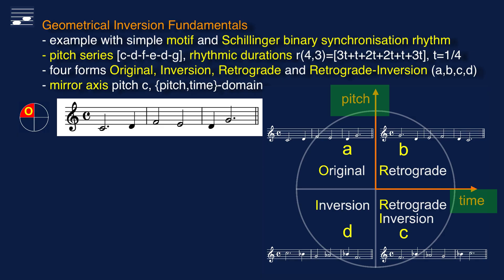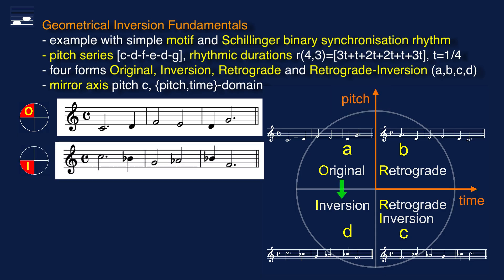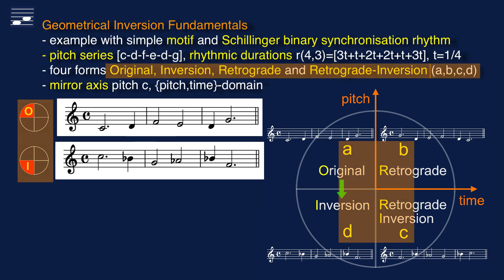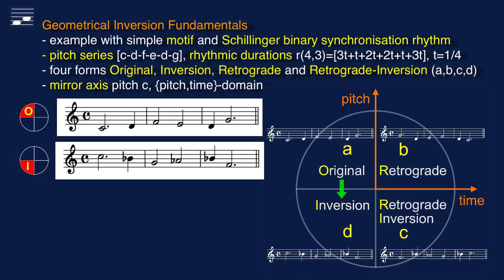Geometrical inversion transformations correspond to mirroring the original motif in either the time or the pitch domain. To find the inversion form we choose the pitch C as the mirror axis. Thus, the pitch D, a major second above the C, becomes the pitch Bb. The F above C becomes the G below, and so forth. Note that I use the labels O, I, R, and RI, whereas in the Schillinger book you'll find the labels A, B, C, and D for these operations — I find that unnecessarily confusing.